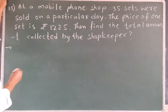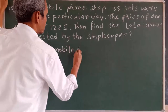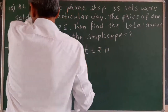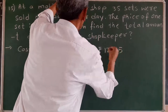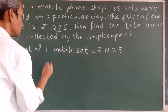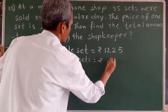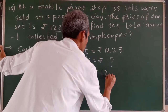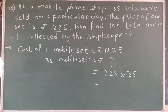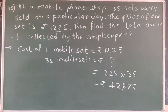Now we will write the data first. Cost of one mobile set is rupees 1,225 — as given. Then the cost of 35 mobile sets: he sold 35 mobile sets on that day. Cost of one mobile set is 1,225; if we multiply by 35, then we will get the cost of 35 mobile sets. Therefore, cost of 35 mobile sets is rupees 42,875.